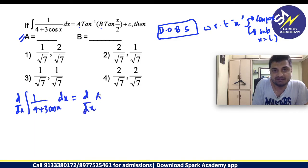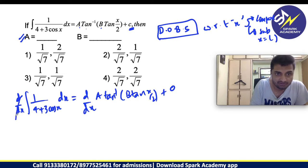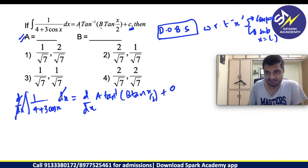After differentiating, you can either compare or you can substitute some value of x. That is a simple way we can get the answer. If you differentiate d by dx of integral 1 by 4 plus 3 cos x dx, I am getting equals to d by dx of A tan inverse of B tan x by 2 plus a derivative of C is 0. It is a constant. Derivative of a constant is 0.